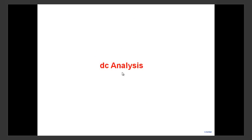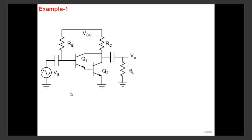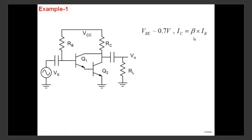Let's look at DC analysis. In amplifiers we do both DC and small signal analysis. All DC analysis is based on two facts: VBE is approximately 0.7V, and collector current IC equals β times IB. We assume that if the amplifier is designed properly, all transistors operate in forward active mode. We can check at the end whether this is true. These two facts are what you apply to your circuit to determine the bias point.